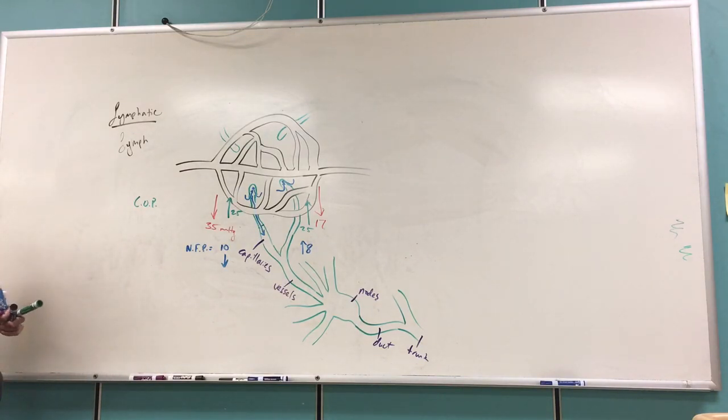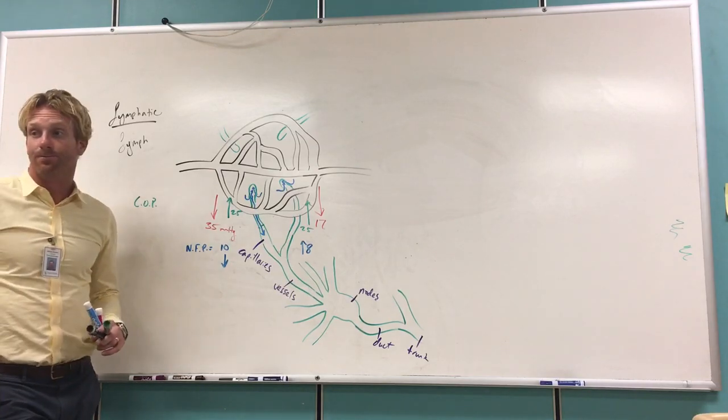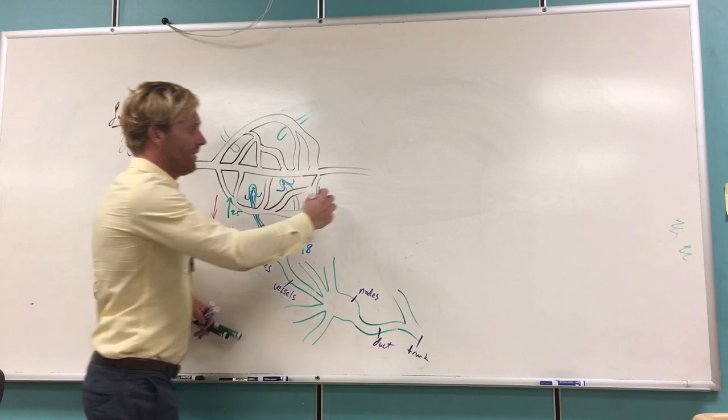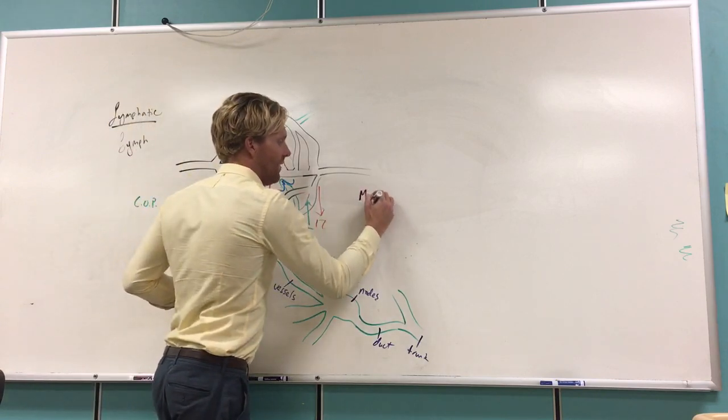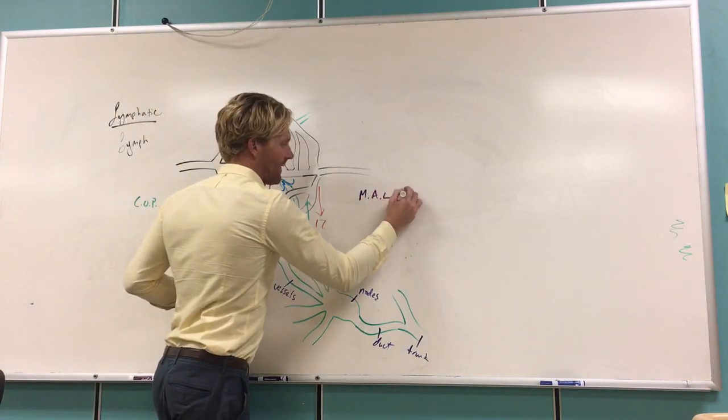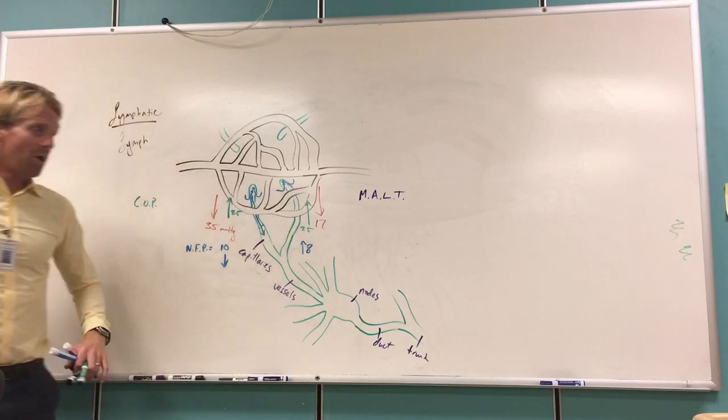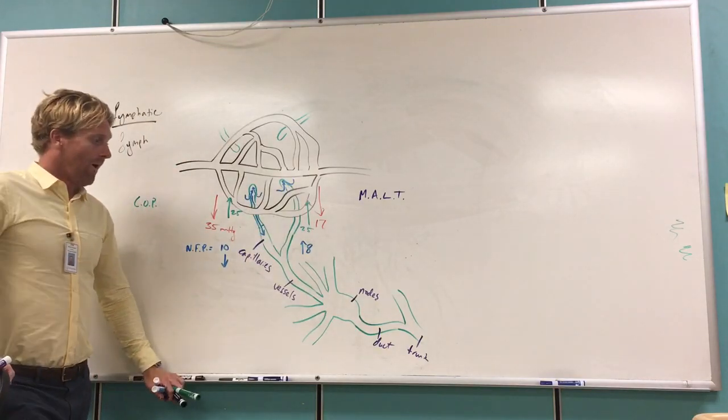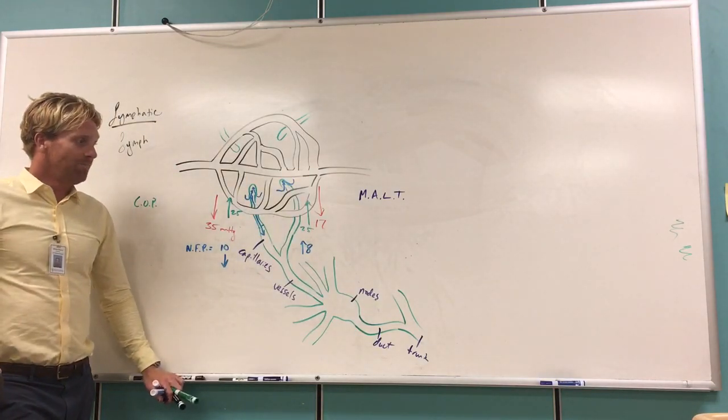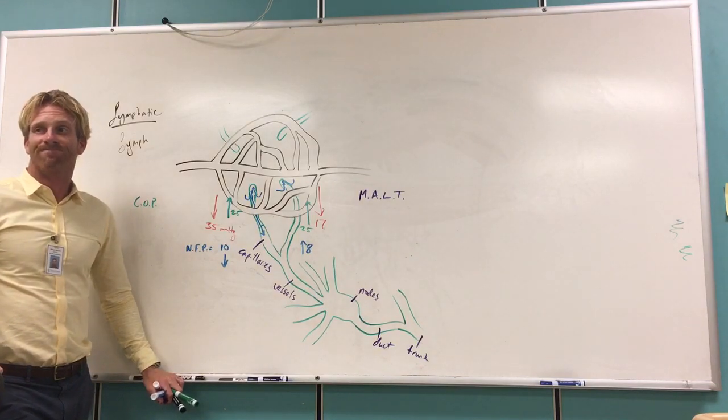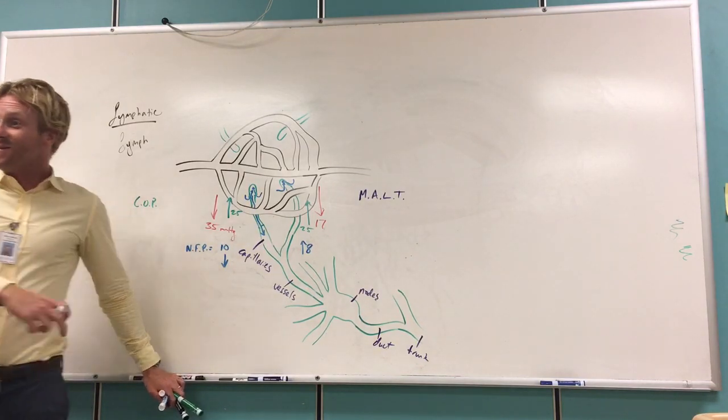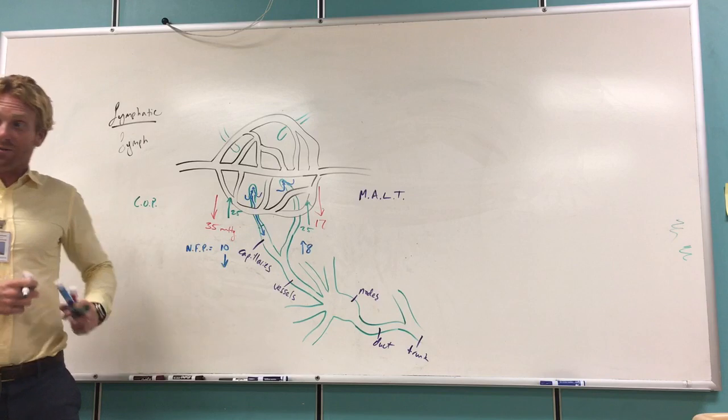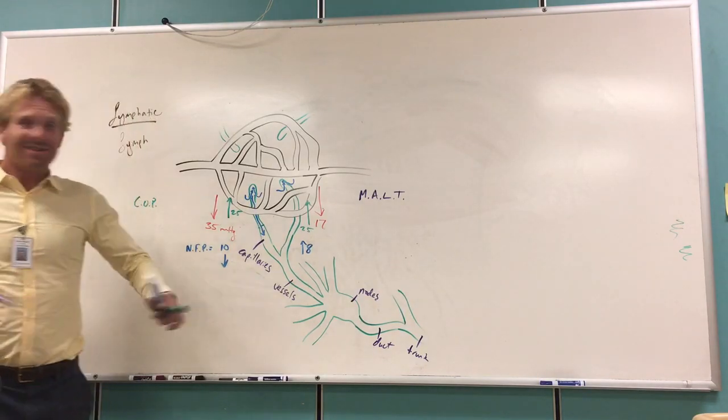Now, there's other places where we'll have lymphatic tissue. And collectively, these are called the mucosa-associated lymphatic tissue, MALT organs. One place you'll find these is the spleen. Your spleen's right here on the side of your abdomen.